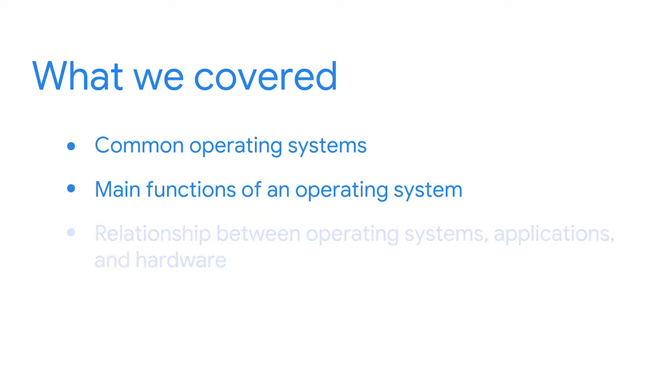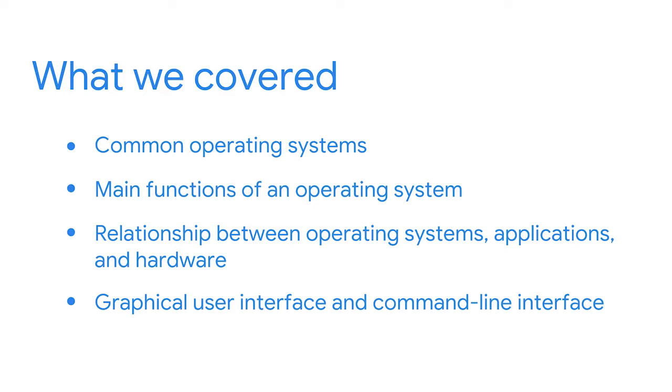What a great section of learning. Let's recap this section's lessons. As a security analyst, it's important that you understand the systems you're working with. Understanding computer basics will help you do your job more effectively and efficiently. In this section, we covered common operating systems, the main functions of an operating system, and the relationship between operating systems, applications, and hardware. In addition, you learned about the differences between the graphical user interface and the command line interface. Understanding the command line interface will be very important for your work. In the next section, we'll focus specifically on the Linux operating system.